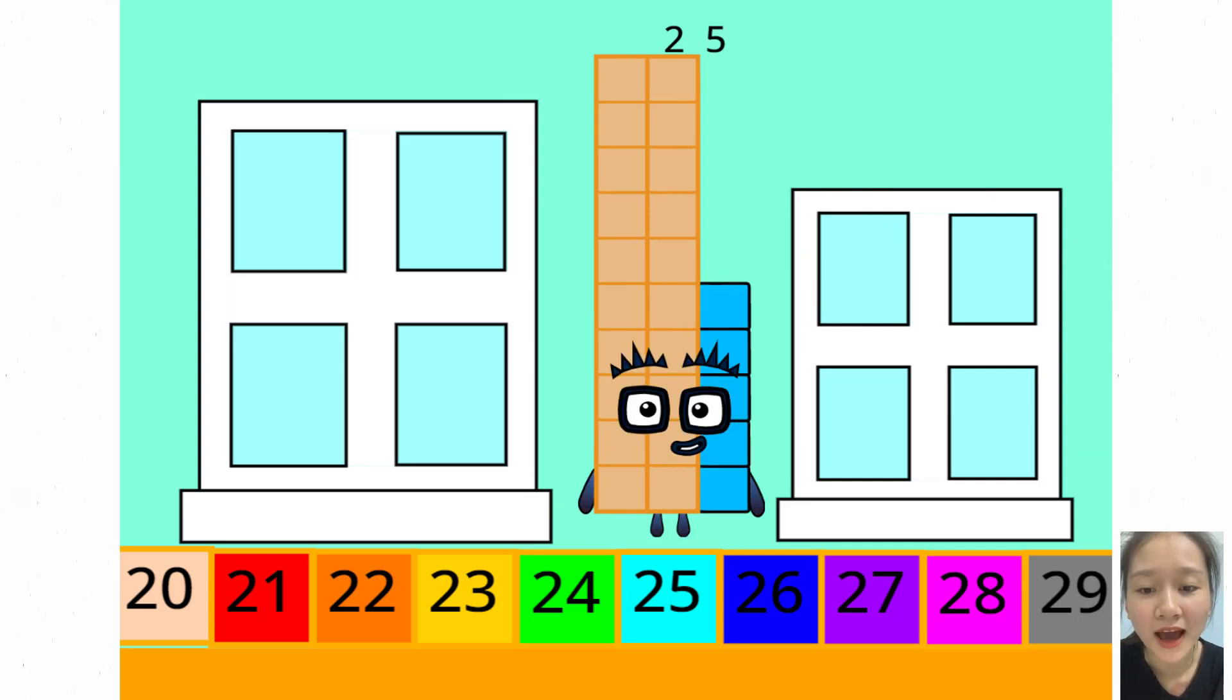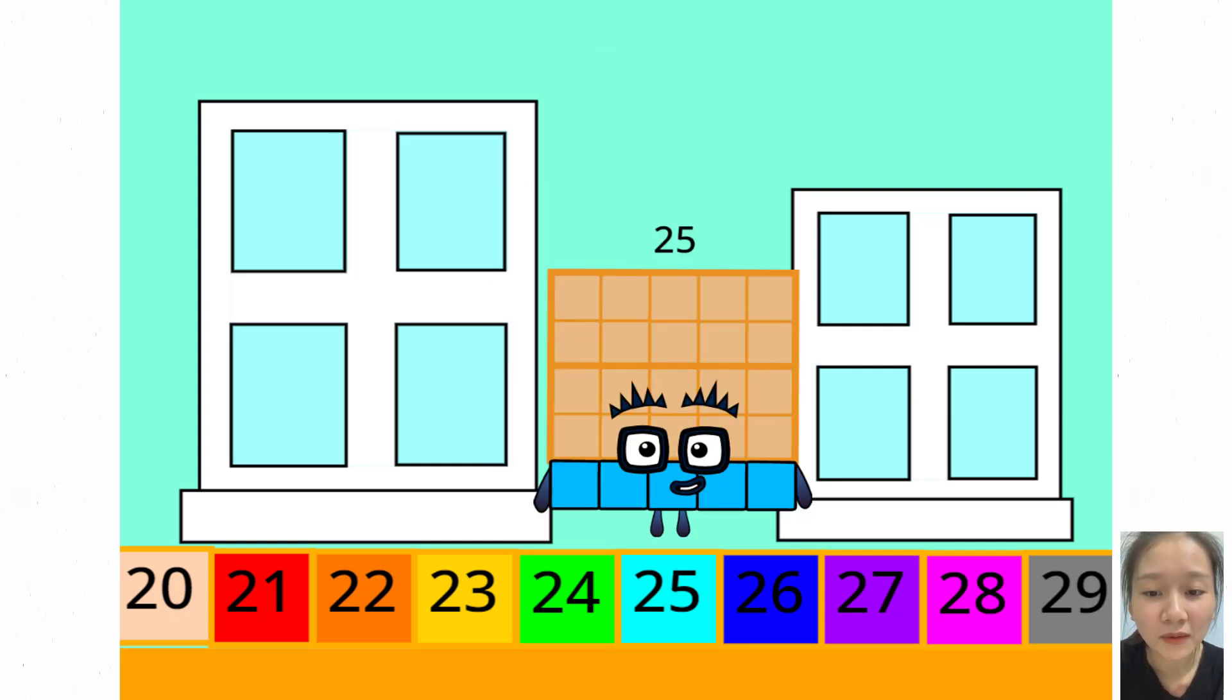If you chose me, correct you are. Hello lovely numbers. I am 25. I am a really big square. Here's proof. Do you know who comes after me?